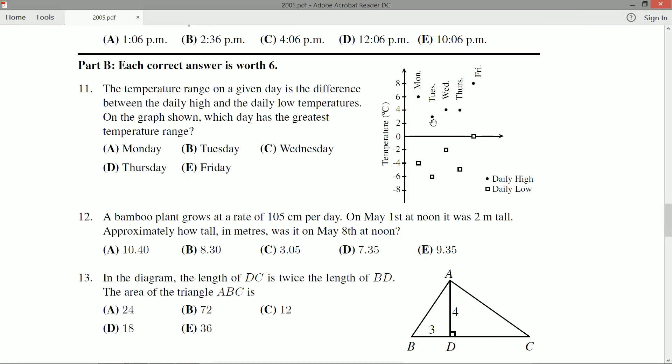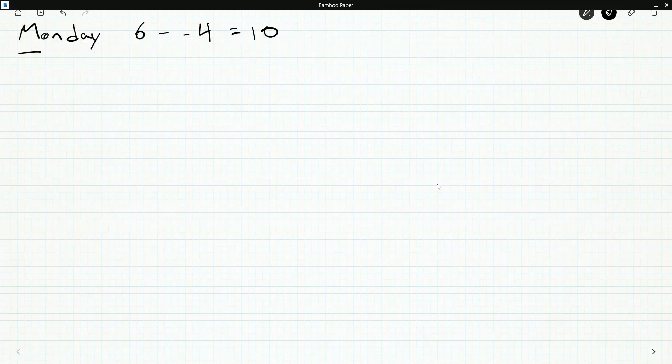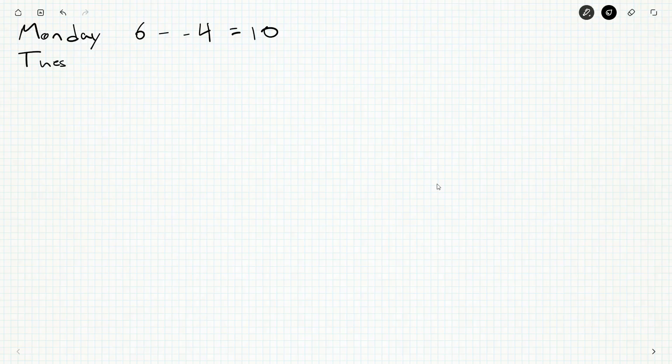So Tuesday, we can read off Tuesday's between the four and the two for its high, so we'll say three and negative six for its low. So Tuesday, three minus negative six. Now this gets close, but it's just a nine.